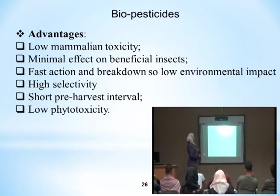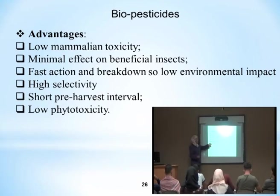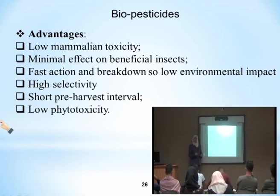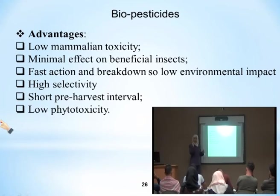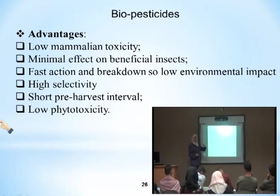Biopesticides have low environmental impact, are highly selective, have a short pre-harvest interval, and low phytotoxicity. They are microorganisms and will not cause phytotoxicity or plant damage since they are not chemicals. The short harvest interval is because the microorganism or biological enemy has a short life cycle — you wait two to three weeks before harvest to eliminate residues. High selectivity means they mostly affect target pests while leaving beneficial organisms unaffected, and they have fast action and break down in the environment.